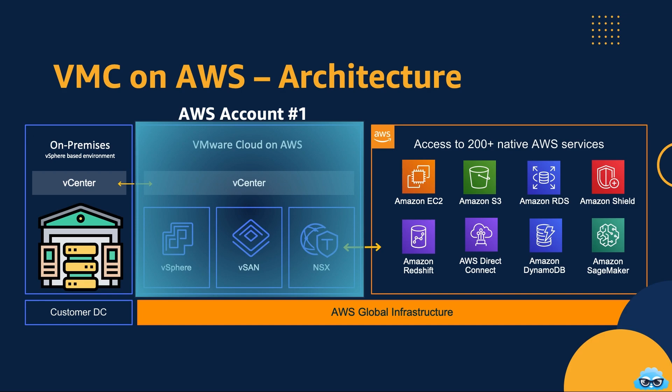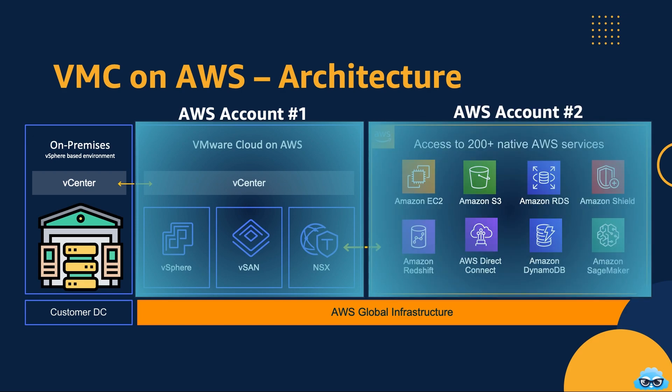The third component: AWS account number two. This is your gateway to the world of native AWS services. Here, you can run and integrate AWS services seamlessly with VMware Cloud on AWS, opening the door to innovation and growth. These three components work in harmony to create a unified, powerful and agile environment.